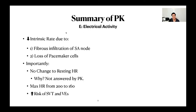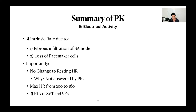This will be covered under E for electrical activity. There is a reduction in the intrinsic rate of the pacemaker cells in the heart, due to two things: fibrous infiltration of the sinoatrial node, and loss of pacemaker cells. Some other texts do talk about infiltration of the AV node as well as loss of pacemaker cells there, but Power and Camp says the AV node is preserved. Other pacemaker cells within the heart are also affected. Importantly, there is no change to resting heart rate.